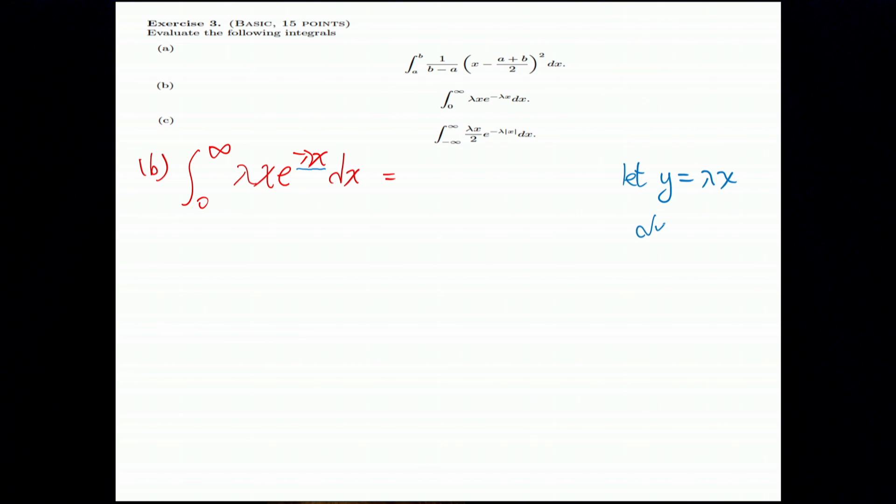That means if I do Y equals lambda X, so lambda X is Y. And E to the minus Y times DY.